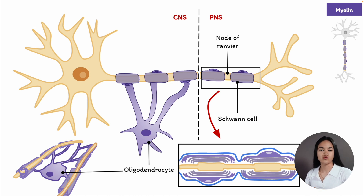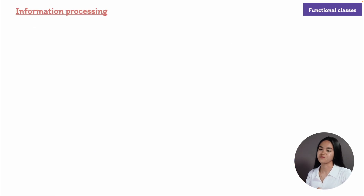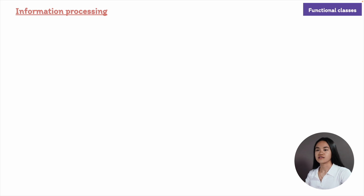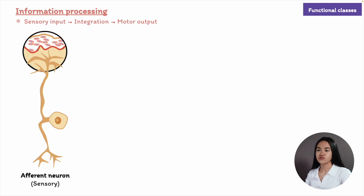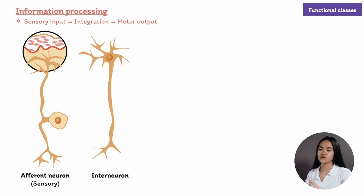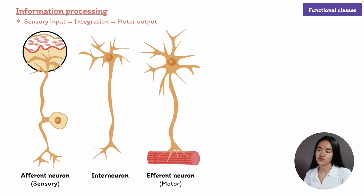This leads us to how the nervous system processes information. The nervous system processes information in three stages: sensory input, integration, and motor output. Depending on how information moves through the nervous system, neurons can be classified into three functional groups: afferent neurons, also called sensory neurons; interneurons, also called association neurons; and efferent neurons, also called motor neurons.